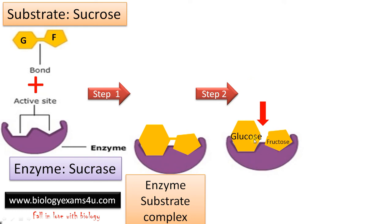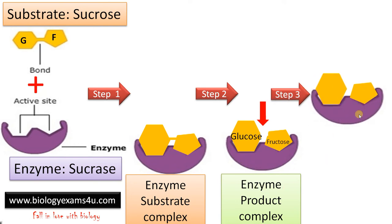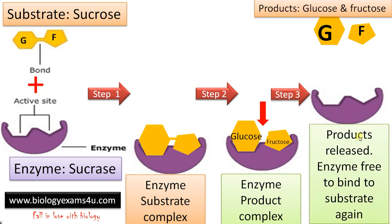Now we have the product — glucose and fructose — bounded to the active site of the enzyme, forming the enzyme-product complex. In step three, these products are detached from the active site of the enzyme. We now have the free products glucose and fructose, and the enzyme is free to bind to another substrate again.